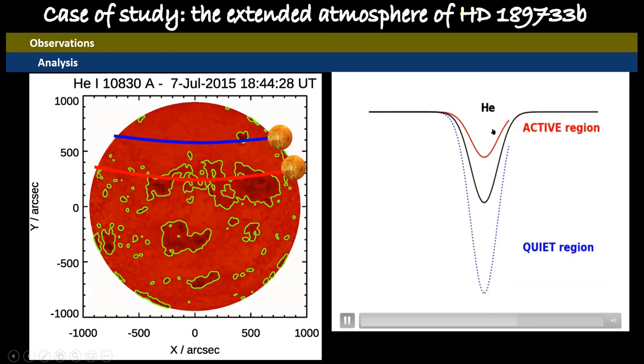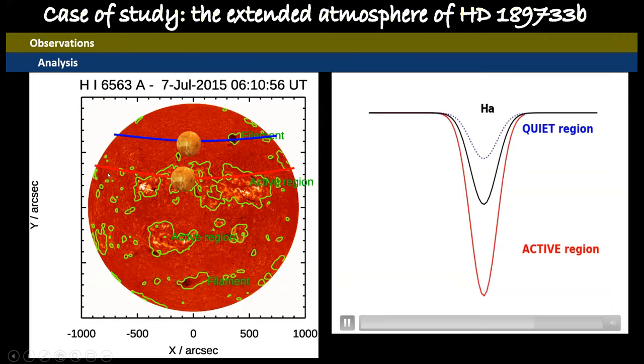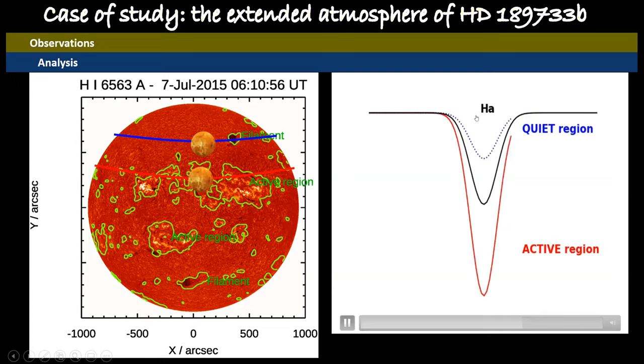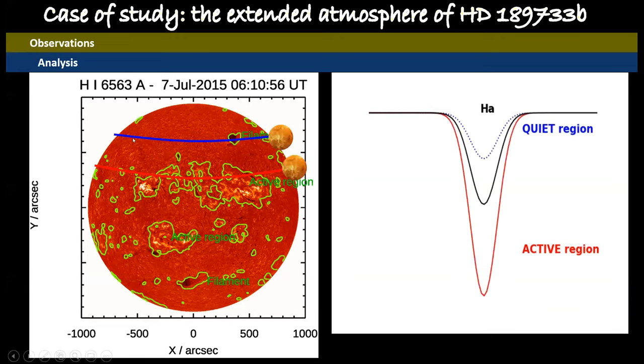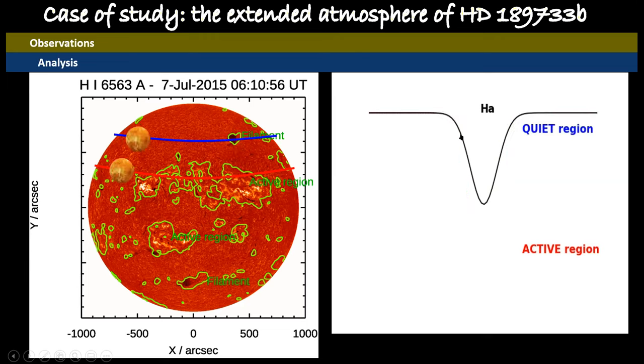For the H-alpha, the behavior is opposite because if the planet transits over an active region, we would have an extra absorption at the position of the H-alpha line. If the planet transits over a quiescent region, the behavior is opposite. This behavior is called the contrast effect.